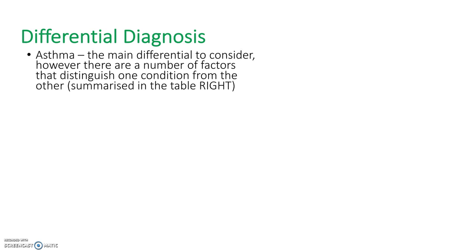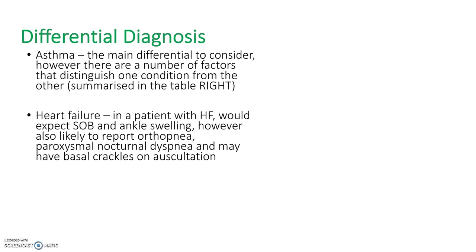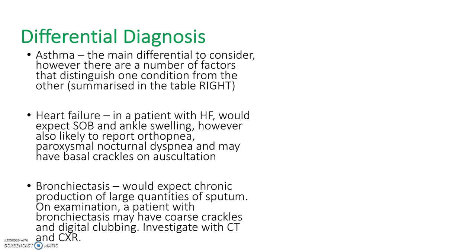In terms of differentials, the main one is asthma, as both are obstructive diseases affecting the airways. A table on the slide demonstrates how to differentiate between asthma and COPD clinically. Another differential is heart failure, which also presents with shortness of breath and ankle swelling; patients may report orthopnoea and paroxysmal nocturnal dyspnoea, and crackles may be heard on auscultation — features atypical of COPD. Bronchiectasis is another differential, with chronic large-volume sputum production; on examination, coarse crackles and digital clubbing would not be consistent with COPD.